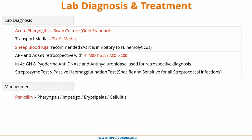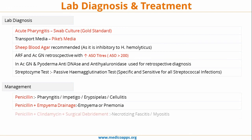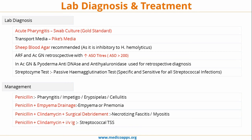Management includes penicillin for pharyngitis, impetigo, and cellulitis. Penicillin along with empyema drainage if there is empyema formation or pneumonia. Penicillin with clindamycin and surgical debridement in cases of necrotizing fasciitis or myositis. Penicillin with clindamycin and IV immunoglobulin in cases of toxic shock syndrome. This completes the review of Streptococcus pyogenes.